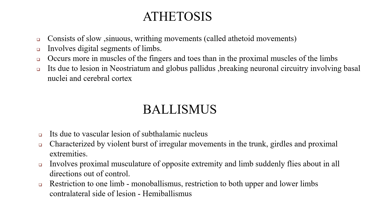Athetosis consists of slow sinuous writhing movements, also called athetoid movements. It involves the distal segments of the limbs, occurring more in the muscles of the fingers and toes than in the proximal muscles, due to a lesion in the neostriatum and globus pallidus, breaking neuronal circuitry involving basal nuclei and the cerebral cortex. Ballismus is due to a vascular lesion of the subthalamic nucleus and is characterized by violent bursts of irregular movements in the trunk, girdles, and proximal extremities. Restriction to one limb is called monoballismus; restriction to both upper and lower limbs on the contralateral side of the lesion is called hemiballismus.